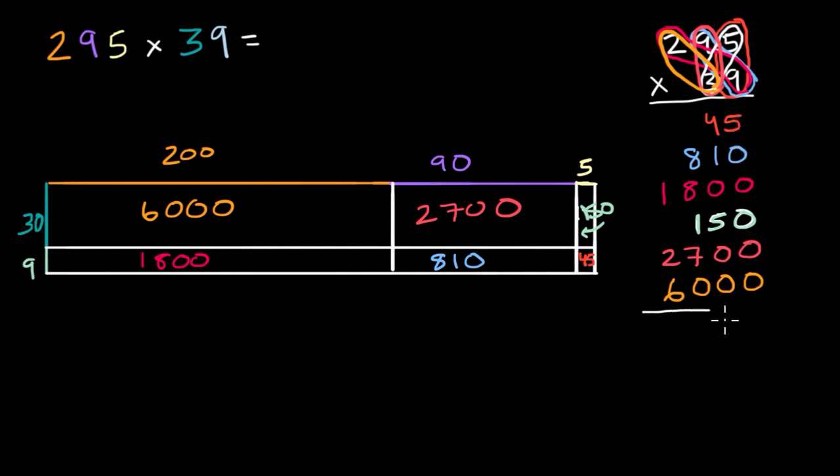And if I want the area of the whole thing, or if I want this entire product, I just have to add all of these things up, all of these partial products up. So let's do that. And I have it all nicely set up here. I only have five ones. Let me put a five there.